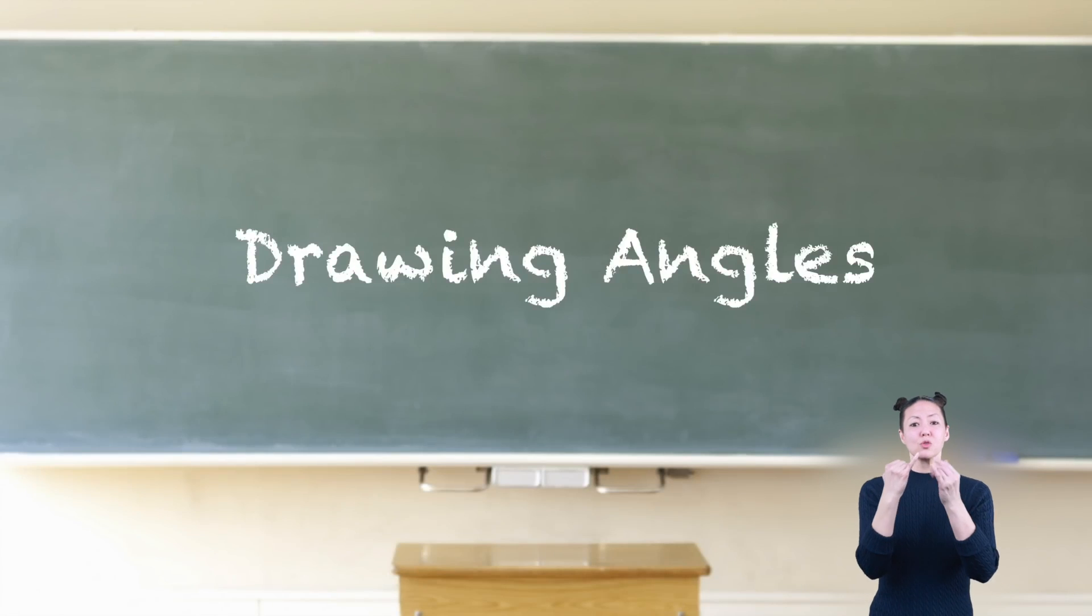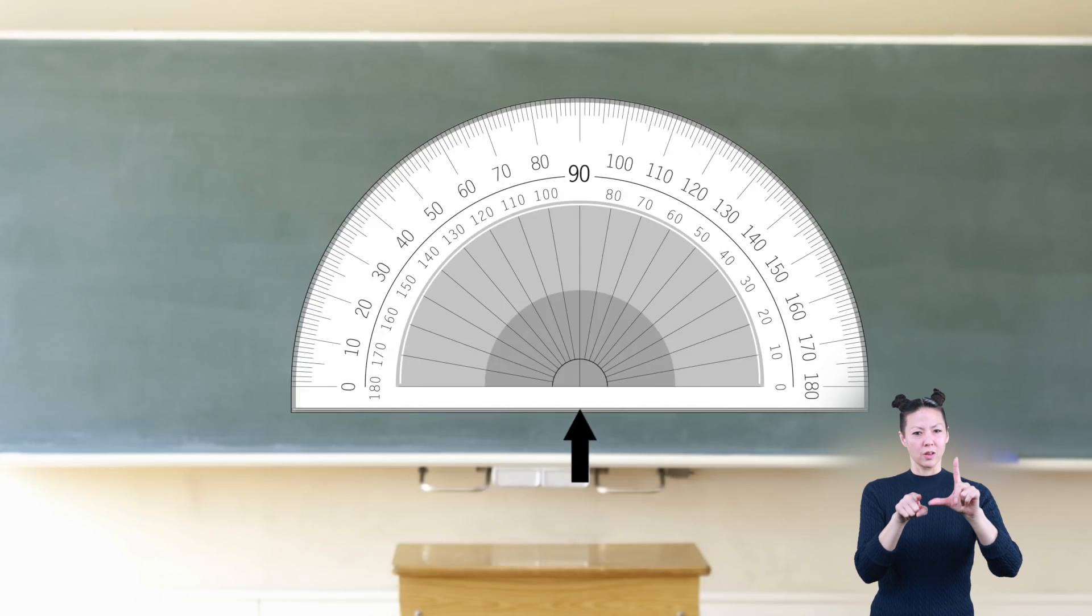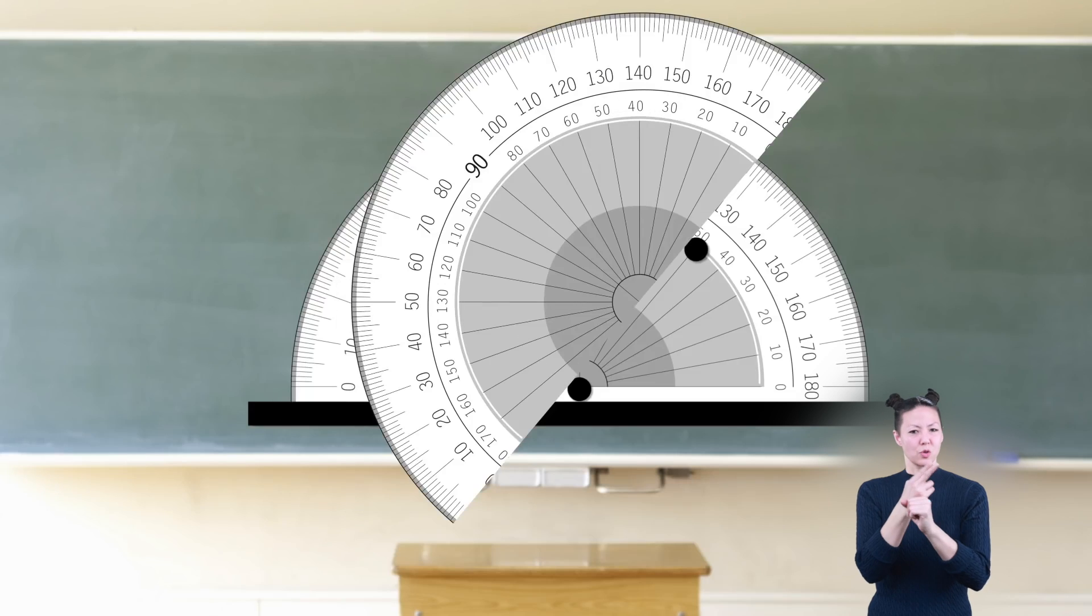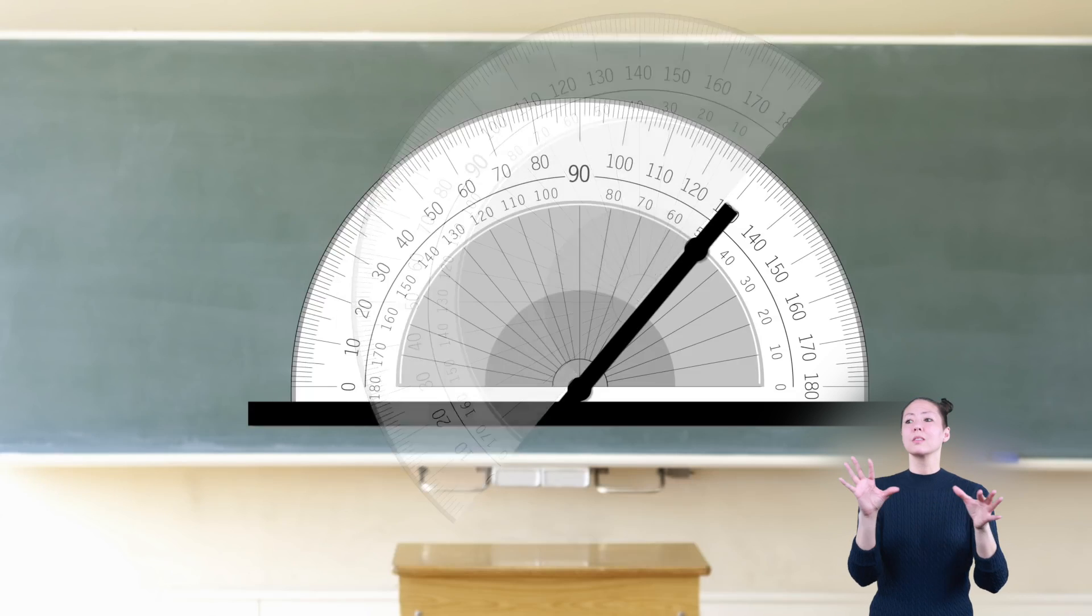Drawing angles. Now that you know about angles, it's time to draw your own using a protractor. Follow these instructions to draw a 50-degree angle. Note the center line on the protractor. Align it on a straight line—any point will do. Find 50 degrees on the bottom row. Make a point. Make another point above the center line. Use the straight edge of a ruler or protractor and connect the points.